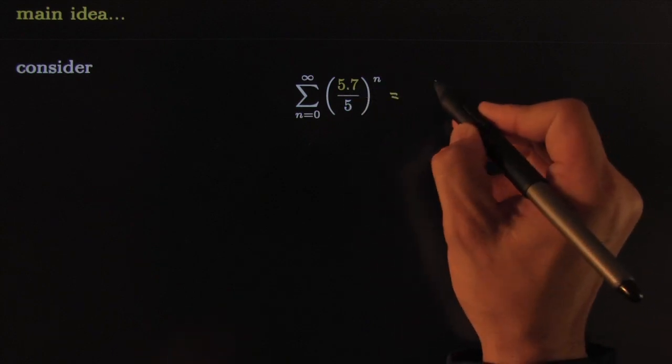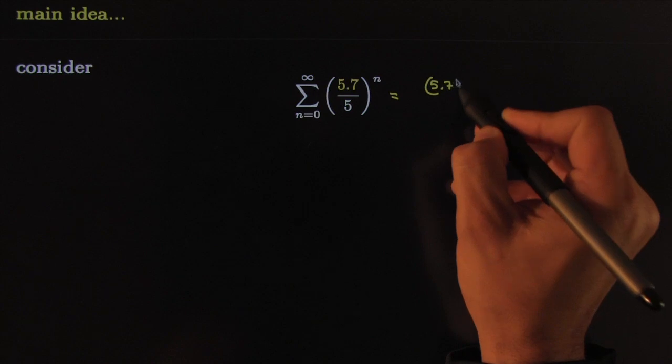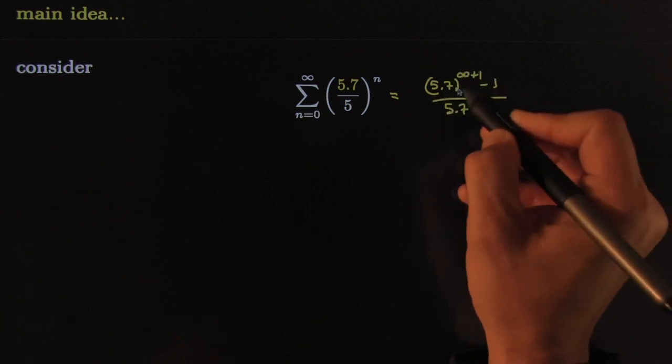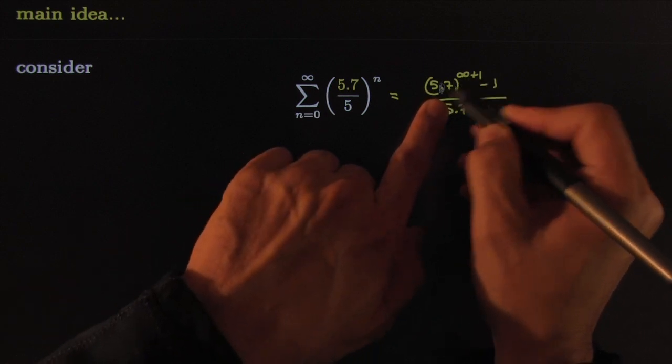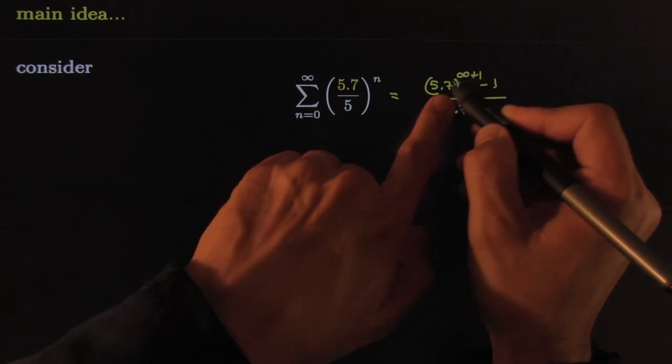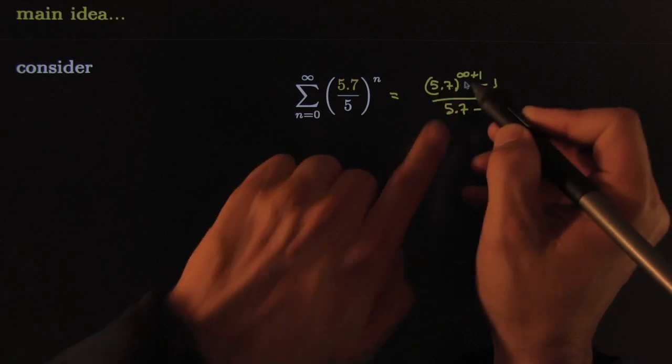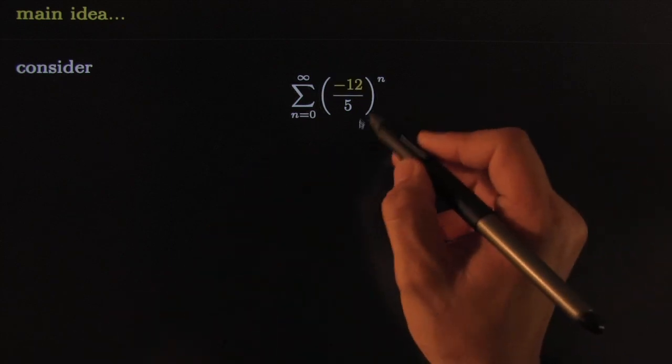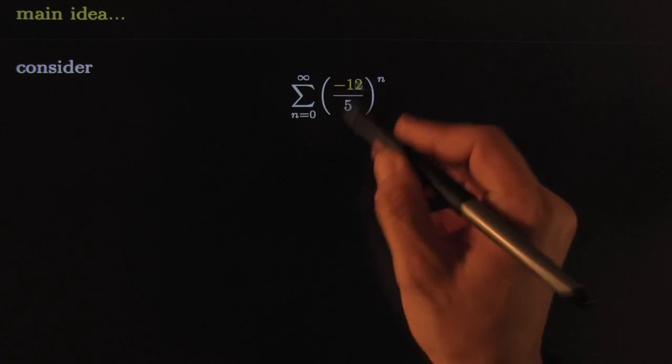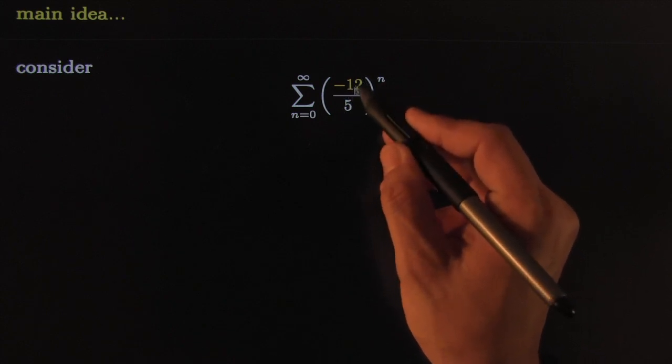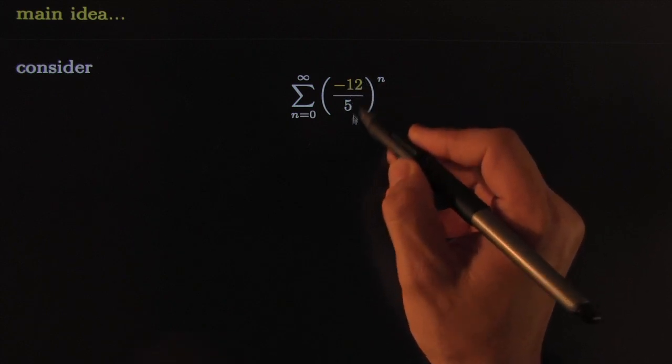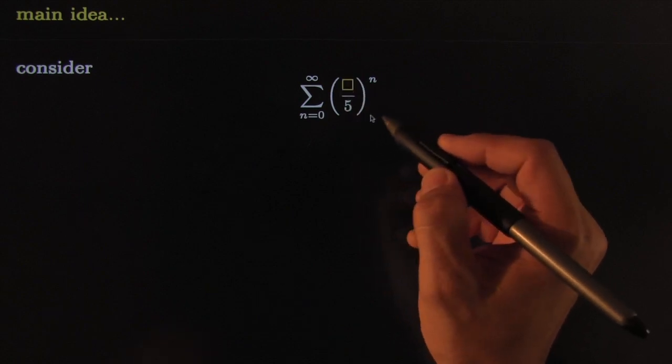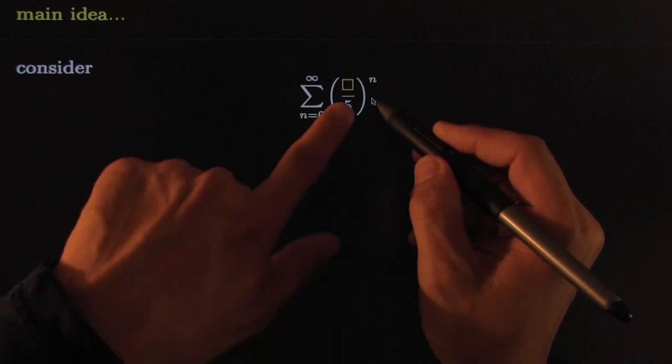This one would be equal to 5.7 raised to the infinity plus one, minus one, all over 5.7 minus one. That would definitely diverge because 5.7 times itself many times—it's big, really big. So, considering the question: for which x does it converge or diverge? This one obviously diverges because the absolute value is greater than one. So that gives rise to the following question: